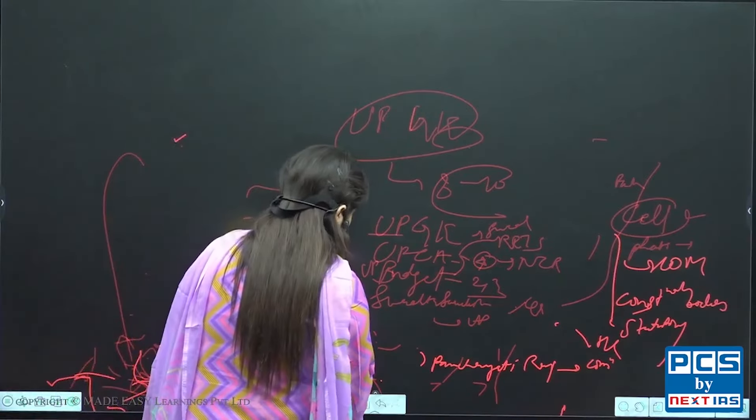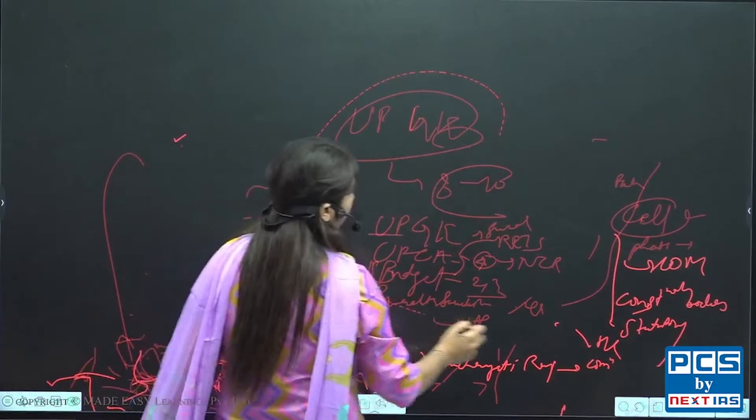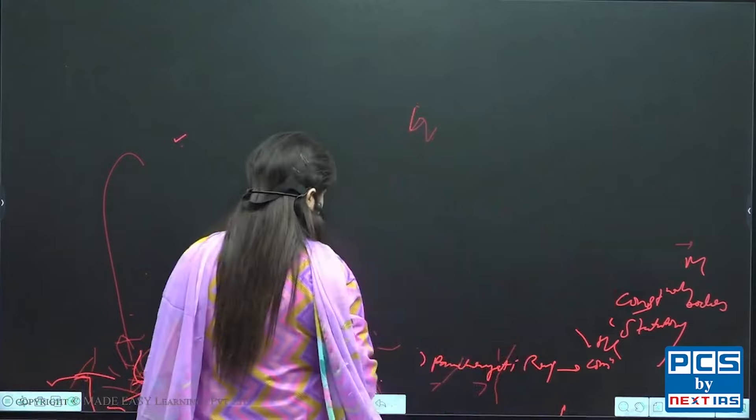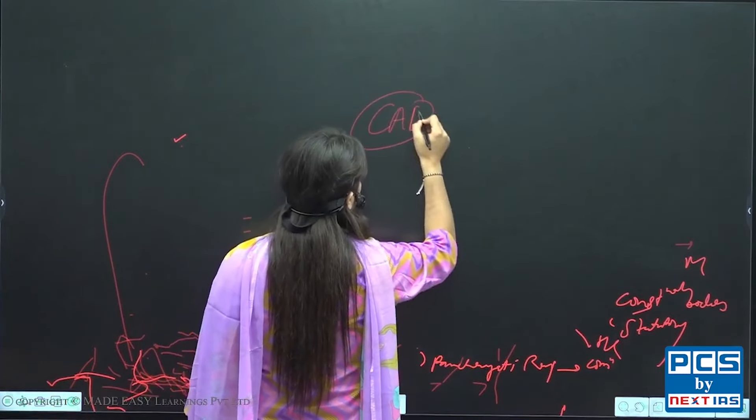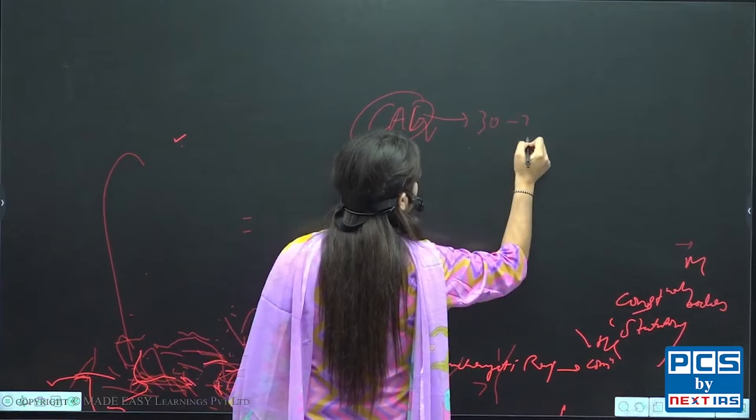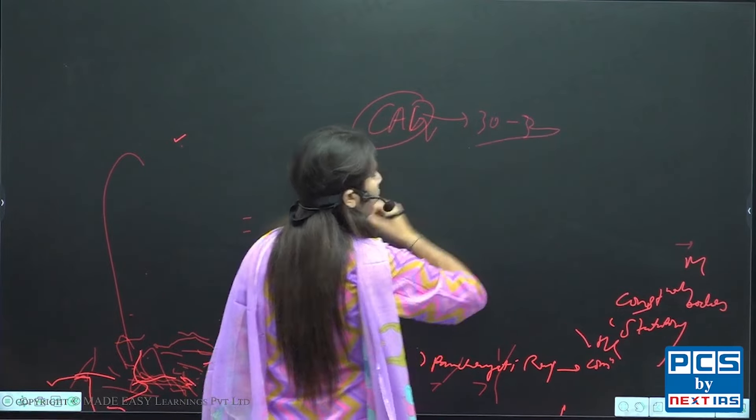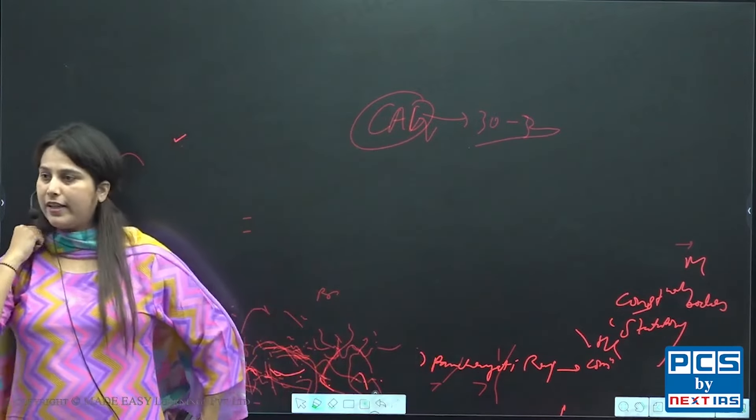Now comes the last portion in the prelims, which is current affairs. Again the weightage is 30 to 32 questions. This weightage is now increasing.